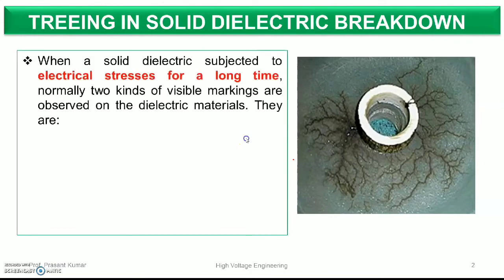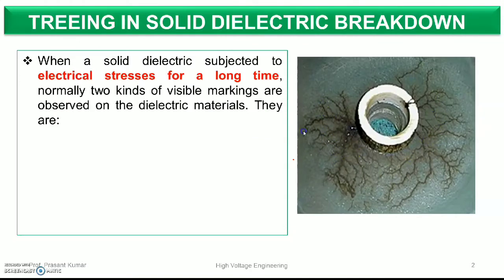Now let's understand this in technical terminology. In any solid dielectric material, a very long-term electrical stress develops. Due to that, some visible markings appear in the solid dielectric material, and these visible markings generally form the shape of a tree — and that's why this phenomenon is called treeing.